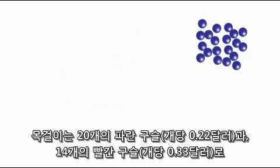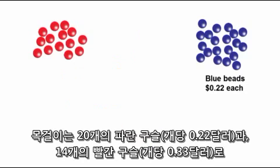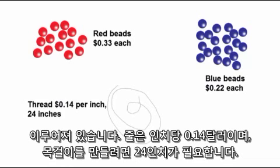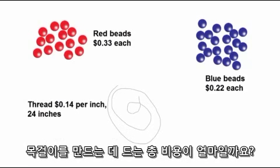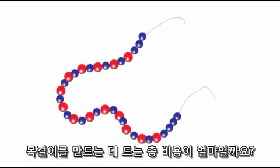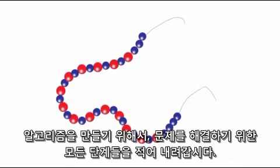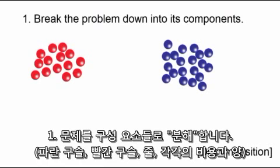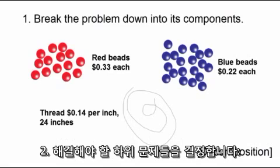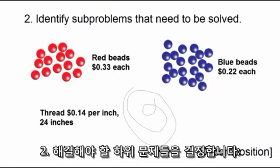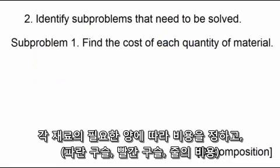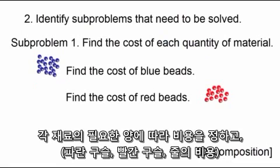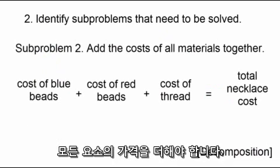We have been working with this necklace example problem throughout the course. A necklace is constructed from 20 blue beads and 14 red beads; each blue bead costs 22 cents while red beads cost 33 cents each. The cost of thread is 14 cents per inch and 24 inches are required. To create an algorithm, we write down all the steps: first, break the problem down into its components — blue beads, red beads, thread, their costs and amounts — to identify sub-problems. Then determine the cost of each quantity of material: cost of blue beads, cost of red beads, cost of thread.